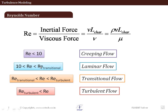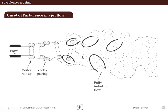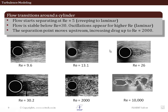The important thing is to determine the transition Reynolds number and turbulent Reynolds number in most cases — and the value of 10 is not always fixed; we'll see some examples. Let's look at the pictorial representation of a jet coming out of an orifice: vortex roll-up takes place and these vortices interact with each other. As they proceed further into the stagnant fluid, this becomes a fully turbulent flow. Another important example is flow around a cylinder.